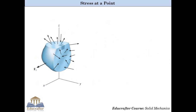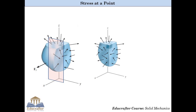Now, cut the body with the plane perpendicular to the X axis. Again, divide the section into small area elements and focus on one elemental area. You will realize there are again three stress components defined on that area: sigma X, tau Xy and tau Xz.